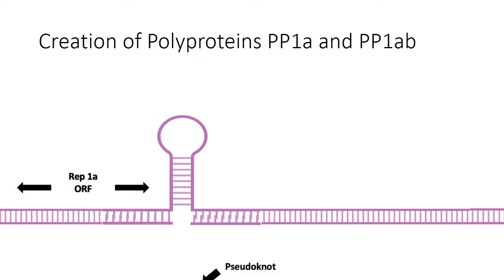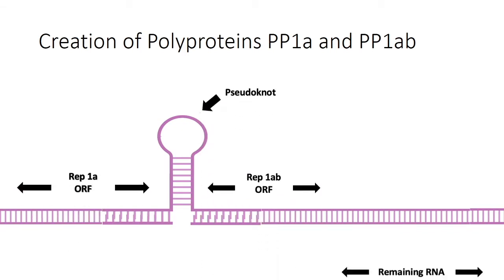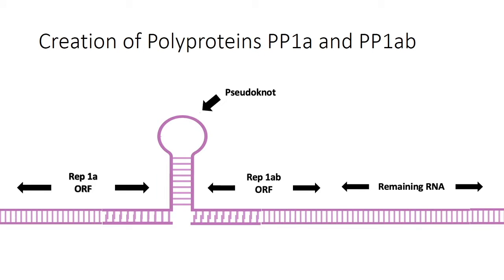As you can see, the viral RNA consists of several sections. There are two replication sites — replication site 1a and 1b — which each code for a different polyprotein.